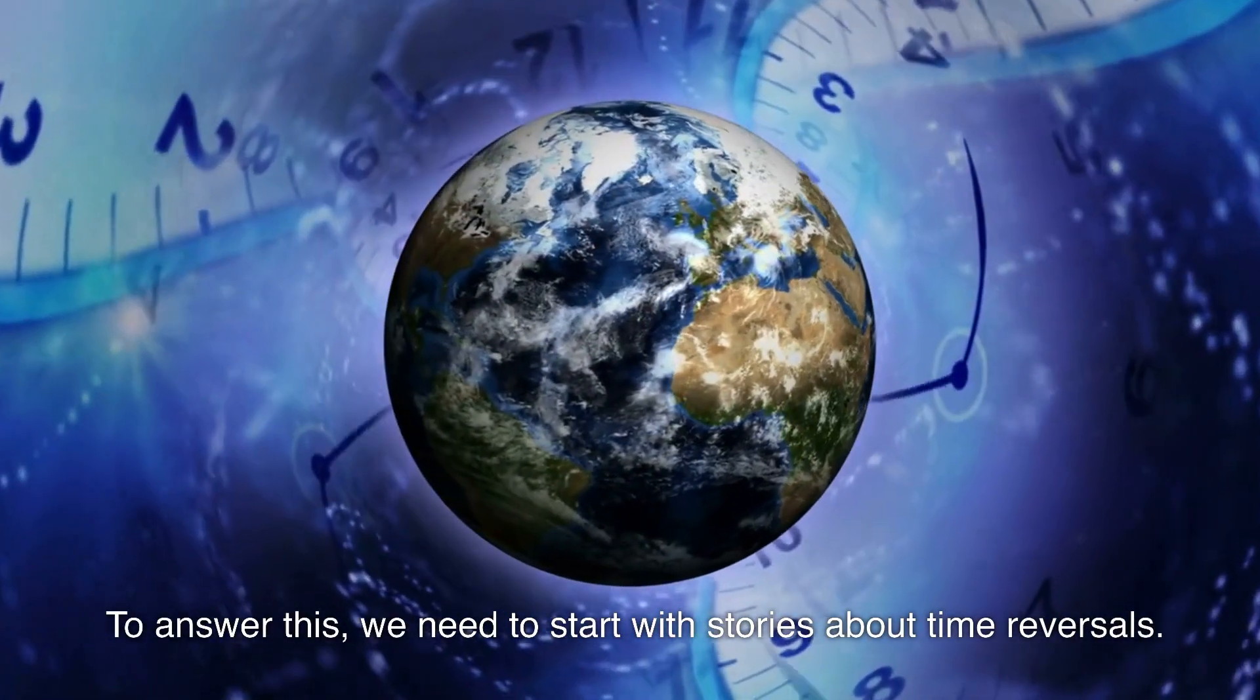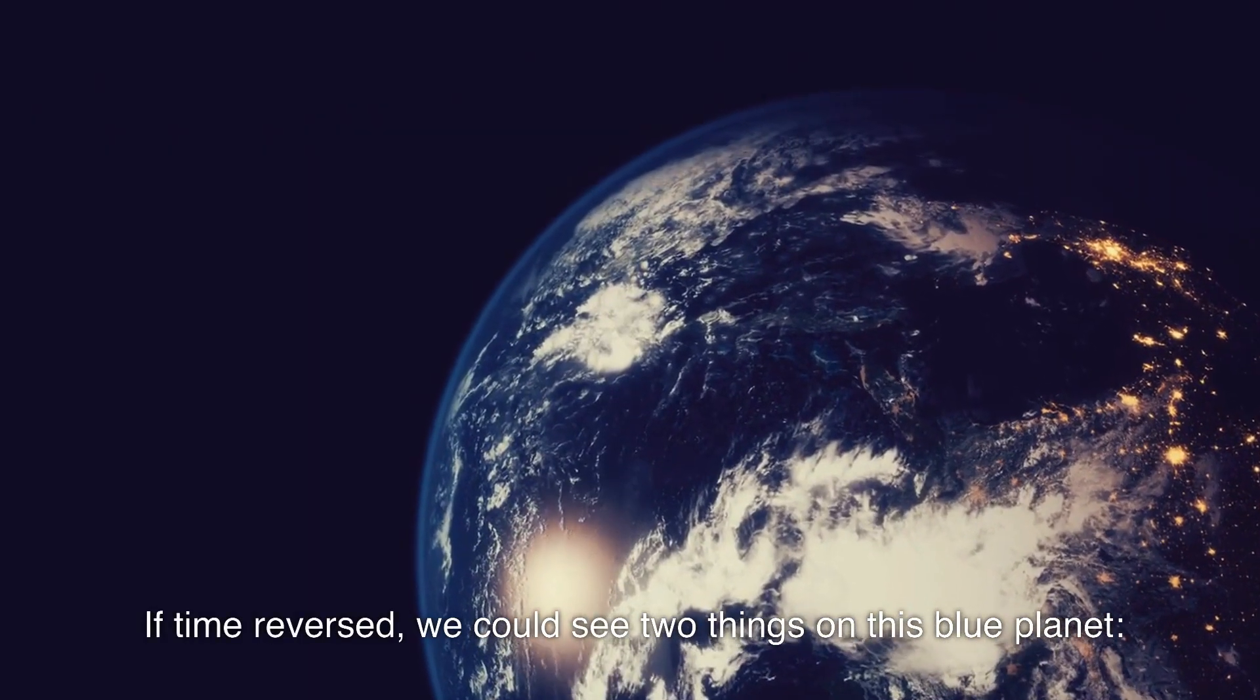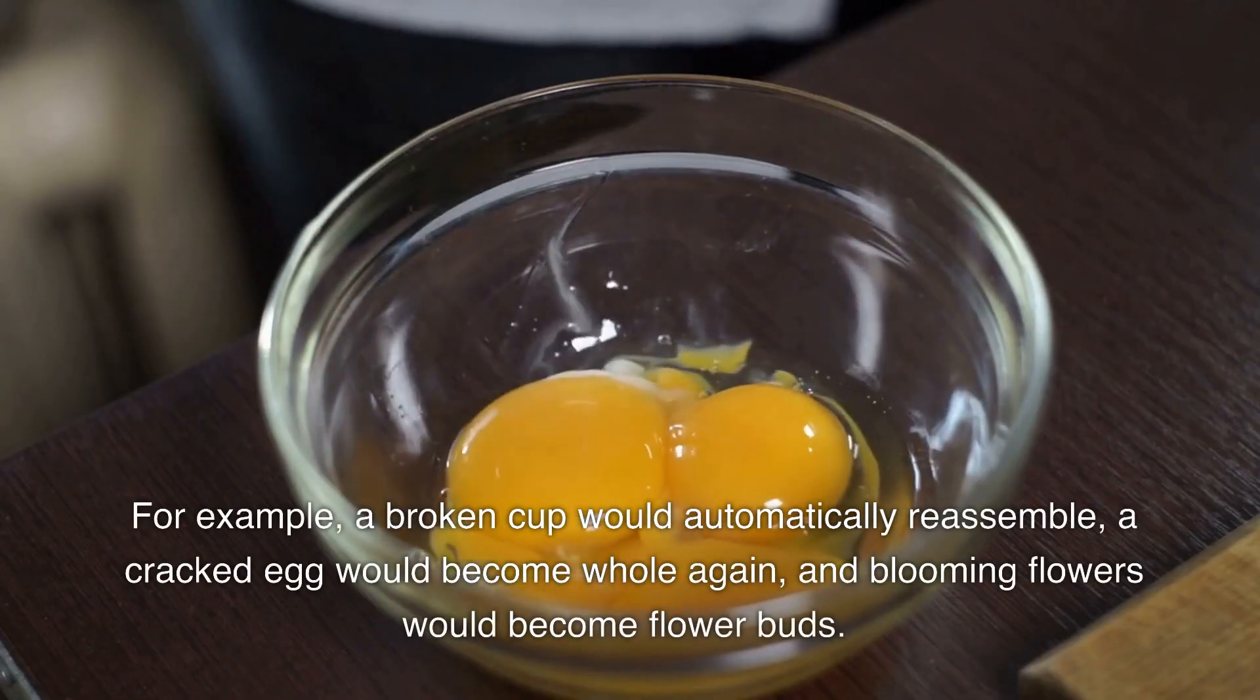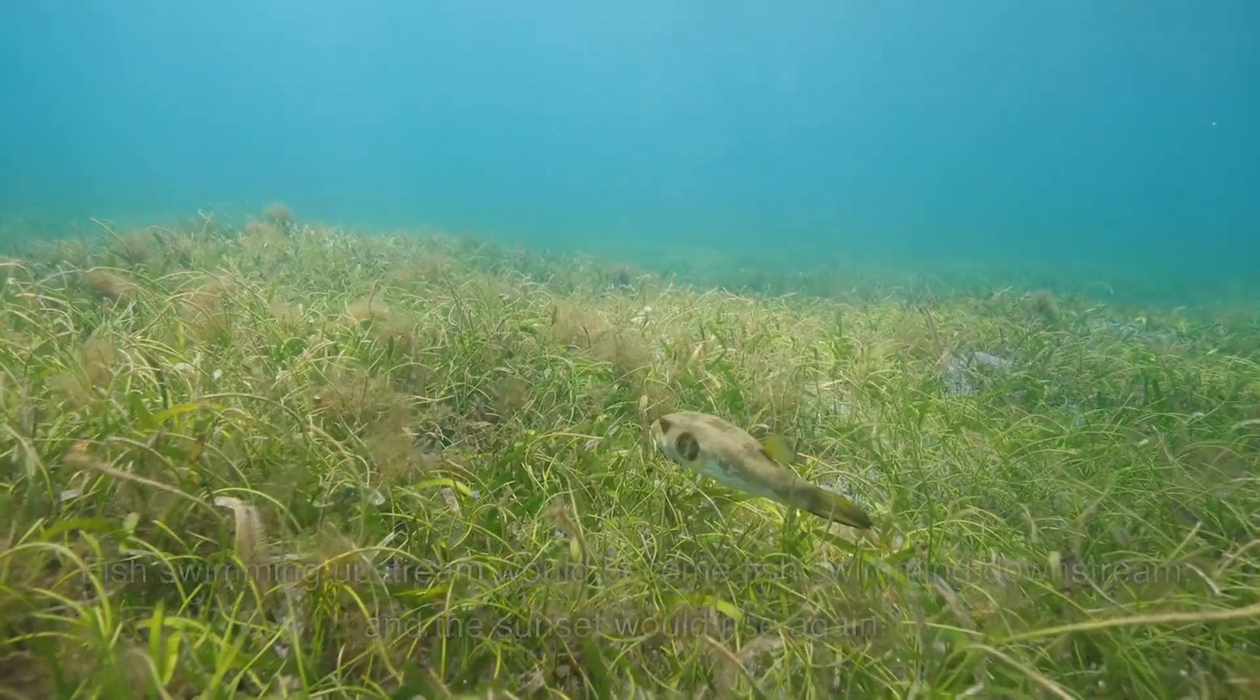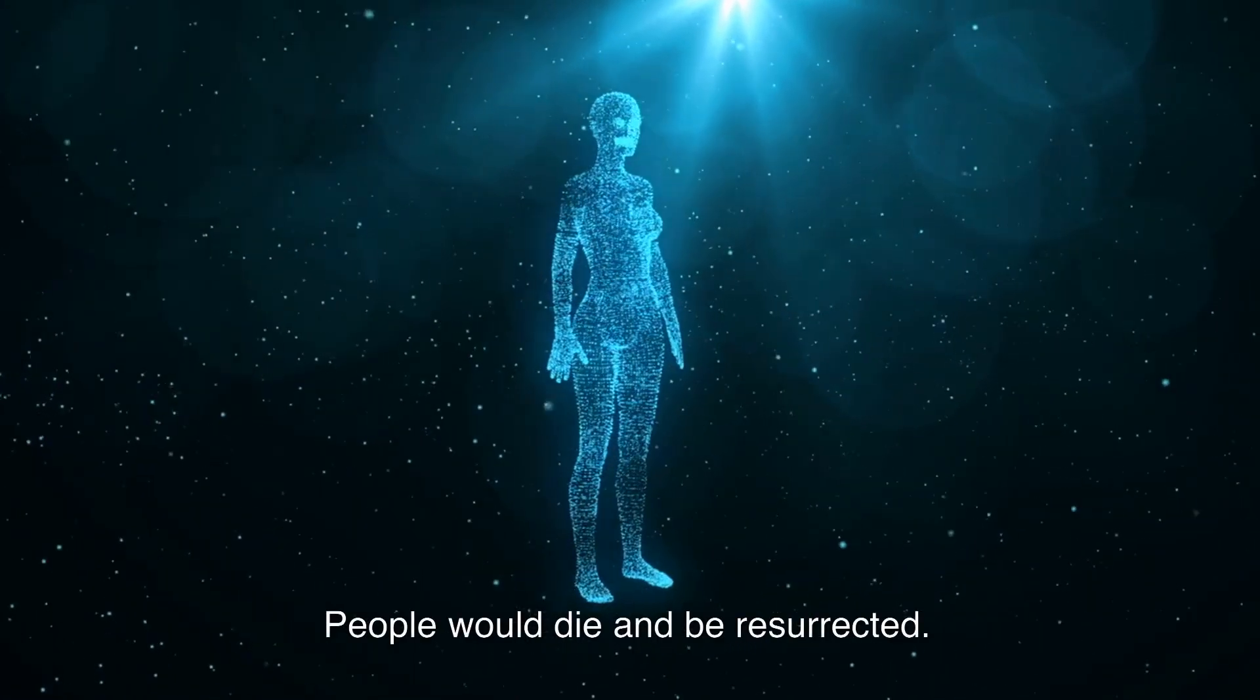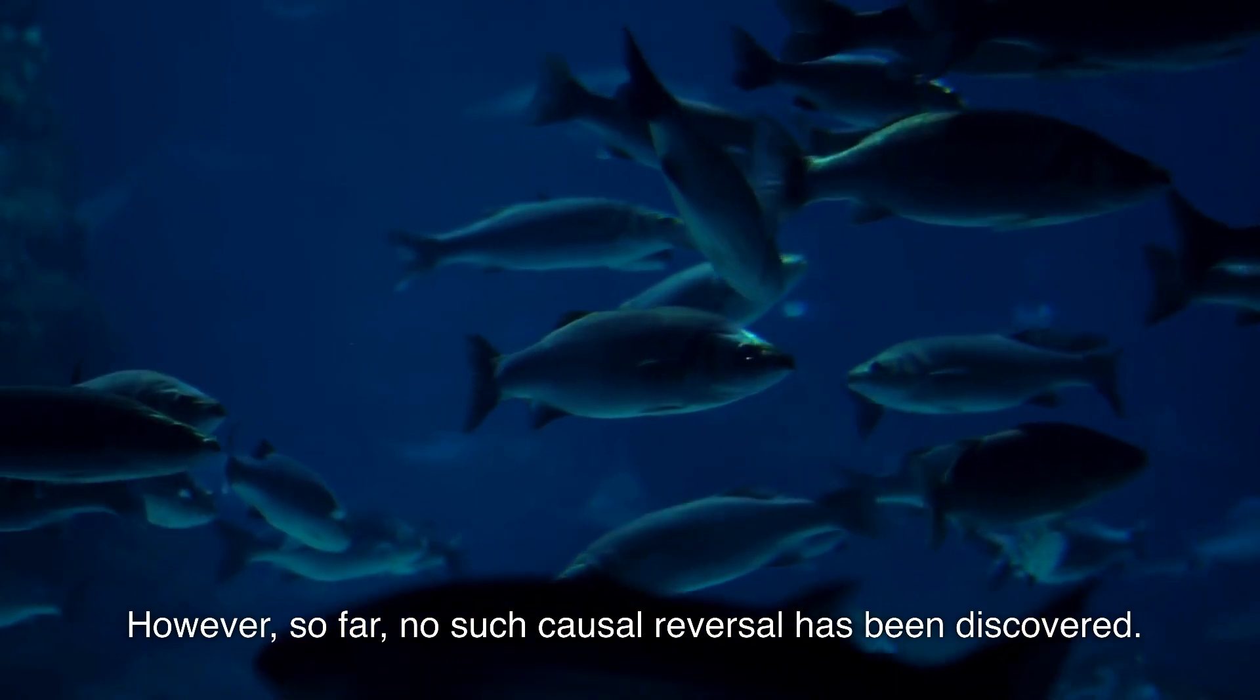To answer this, we need to start with stories about time reversals. If time reversed, we could see two things on this blue planet. First, the reverse of causality: a broken cup would automatically reassemble, a cracked egg would become whole again, blooming flowers would become flower buds, fish swimming upstream would become fish swimming downstream, and the sunset would rise again. People would die and be resurrected. However, so far no such causal reversal has been discovered.